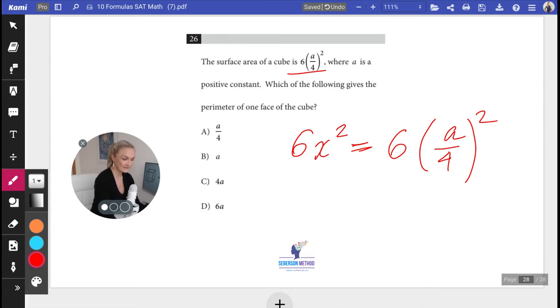How can I find my X? Because we need a perimeter of one face of a cube, and the perimeter is one face times 4. So I need to find my X. Divide both sides by X. Oh, divide both sides by 6. I'm going to get X squared is equal to (A/4), all of it squared.